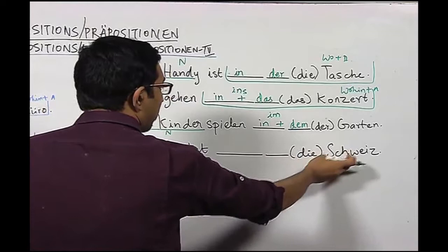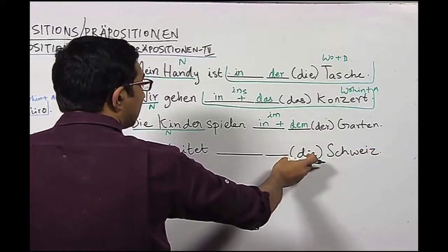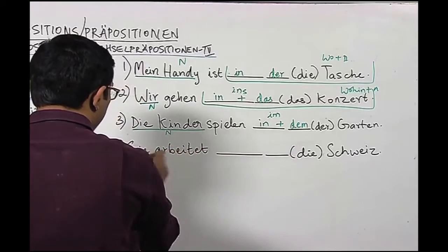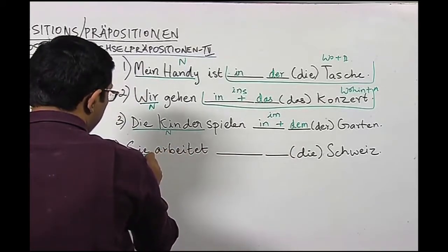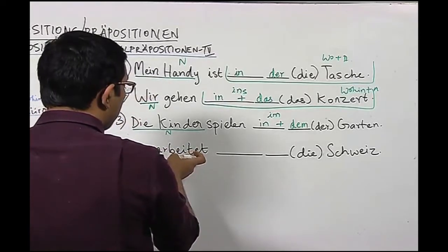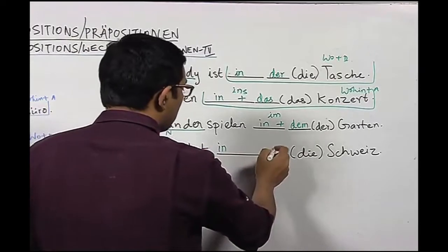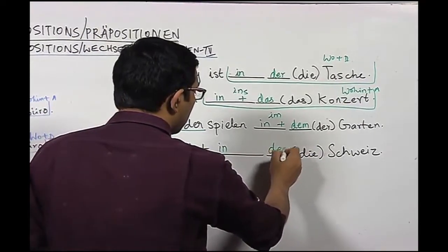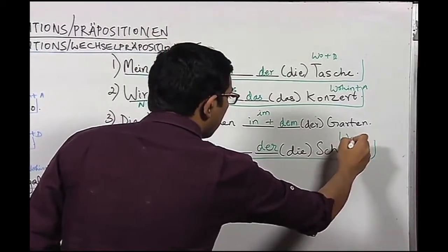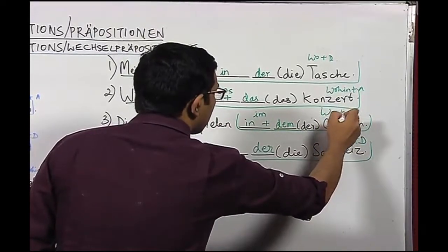Sentence number four: Sie arbeitet in der Schweiz. 'Schweiz' is the name of the country Switzerland, and it carries the article 'die'. The verb 'arbeiten', conjugated to 'arbeitet' according to the nominative 'sie', belongs to the list of dative verbs. So we write 'in' as a dative preposition, and 'die' becomes 'der' in dative, giving us 'in der Schweiz'. With that we get the wo question answered in dative.